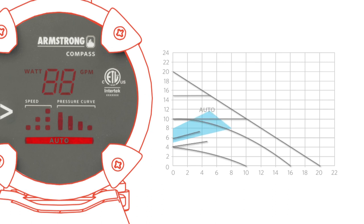In auto mode, built-in intelligence selects a proportional pressure setting that best matches system demands to provide optimum efficiency and save energy.